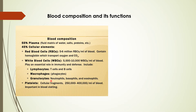Granulocytes include neutrophils, basophils, and eosinophils; these are for the inflammation response and provide anti-allergic functions. So these are the different functions done by the RBCs and WBCs of the blood. Another important blood cell is known as platelets, which are very important blood cells that help in clotting of blood.